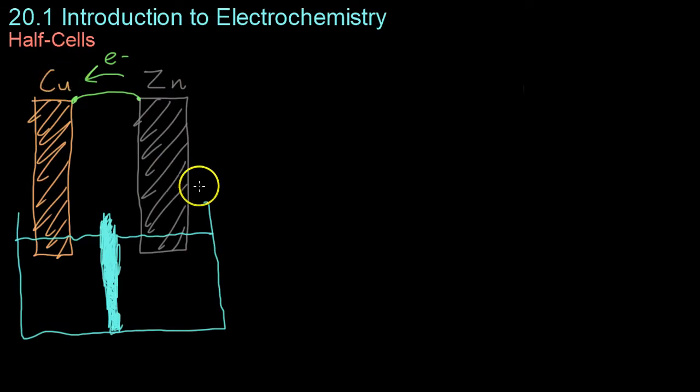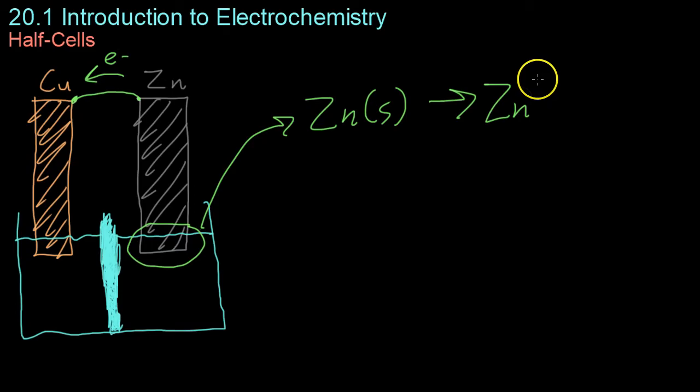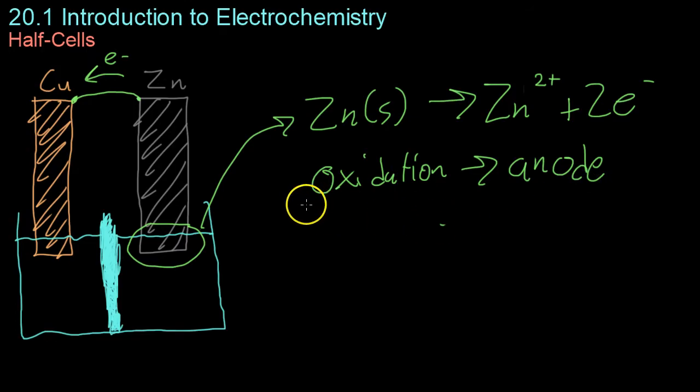Looking more closely now at the individual half cells, we can write a reaction for what happens in each of these metal solution interactions. For example, this neutral zinc which is solid in this bar is ionized in an oxidation reaction and loses its two electrons. Because oxidation occurs at this electrode right here, this is what is known as the anode. This is easy to remember because oxidation begins with a vowel and anode begins with a vowel.